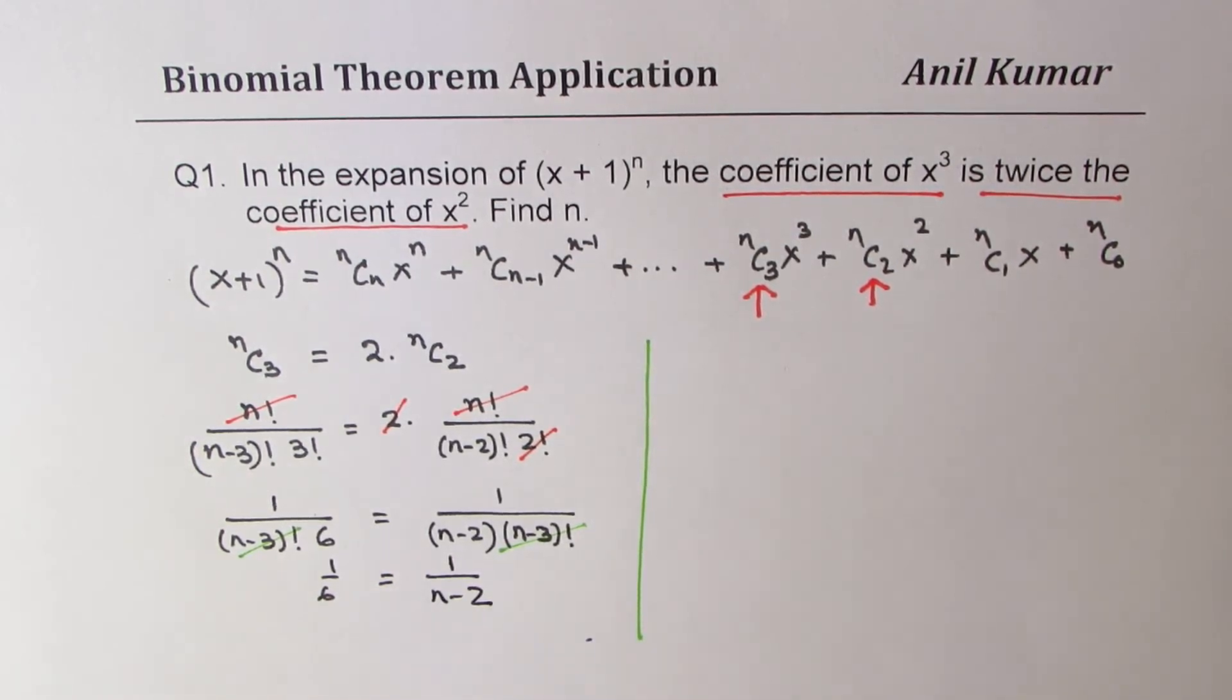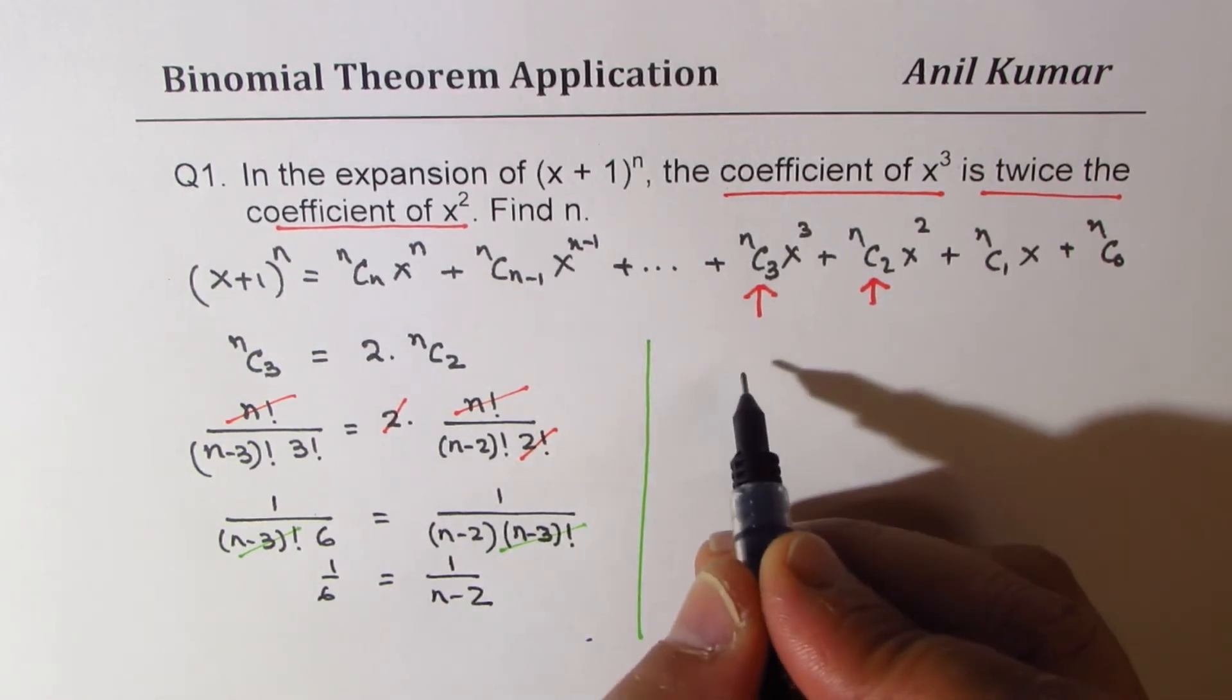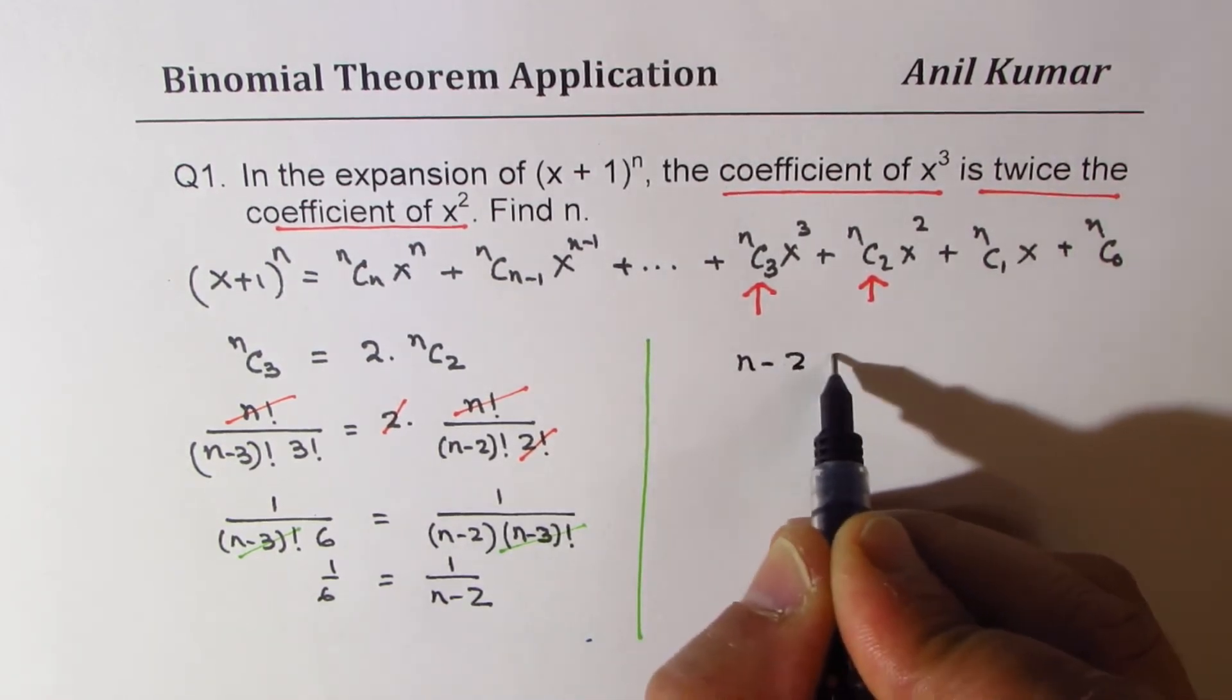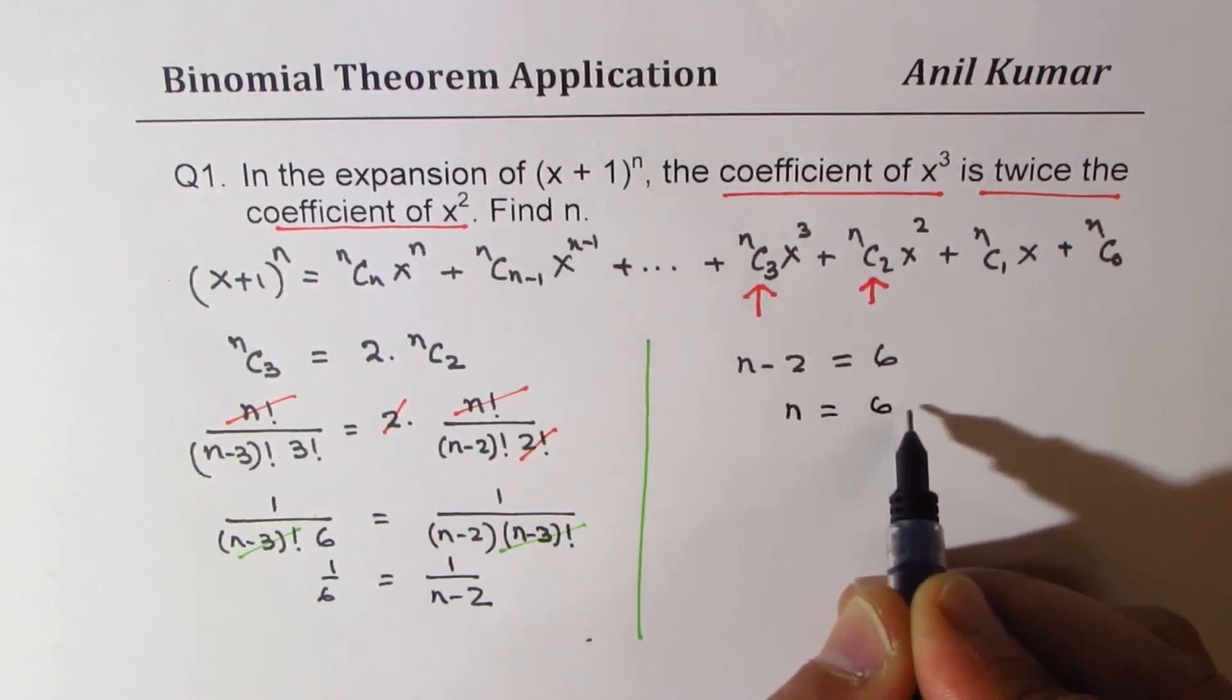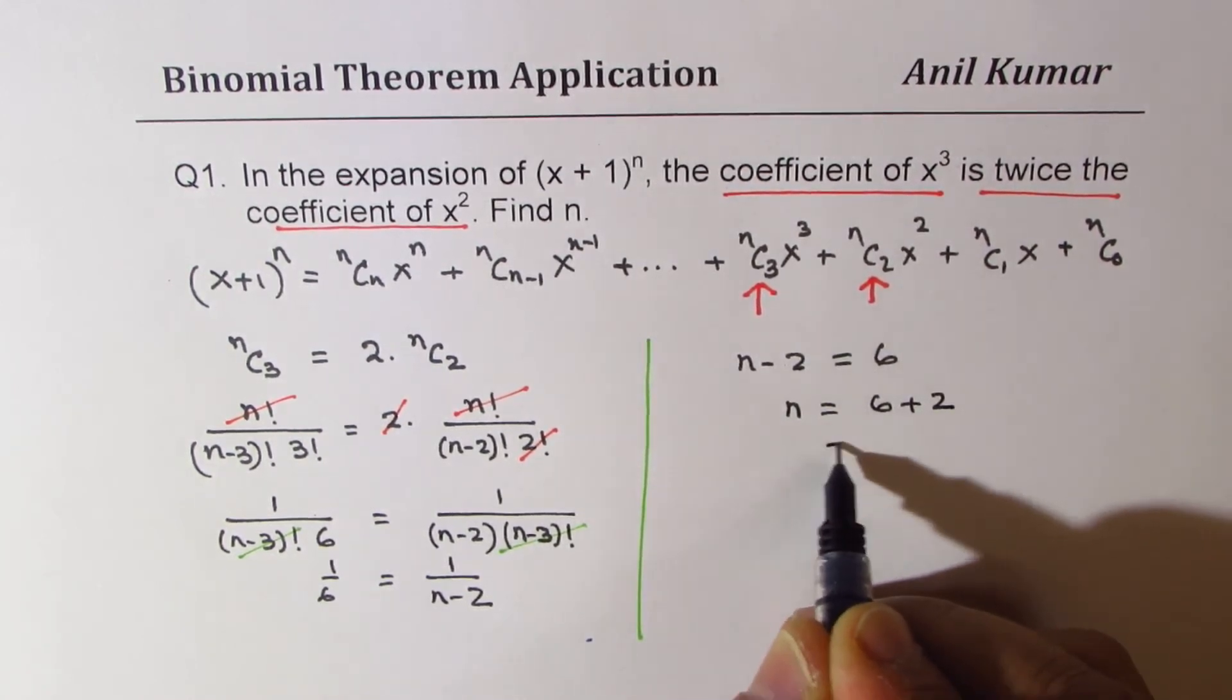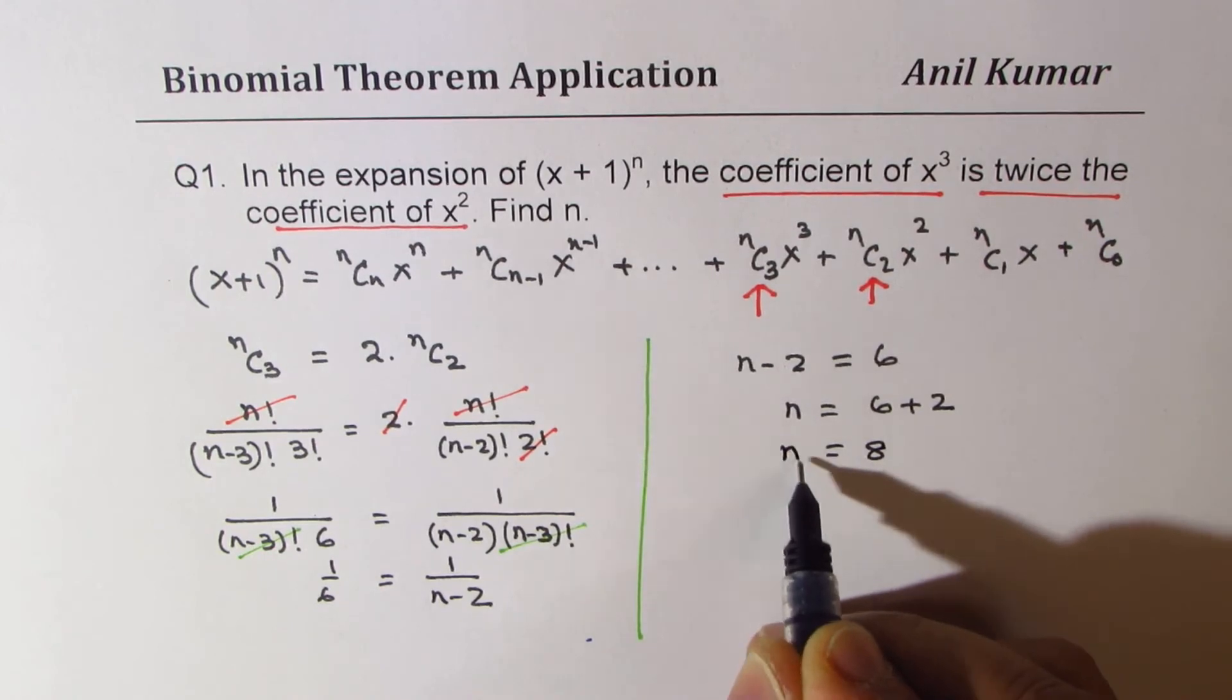So we can solve for n now. We can just cross multiply. So we get n - 2 equals 6, or n equals 6 + 2, which is 8. So we get n equals 8.